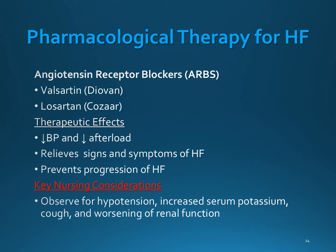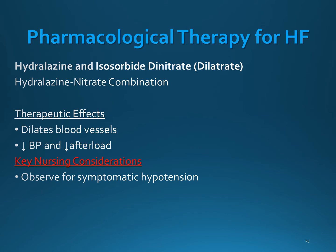Angiotensin receptor blockers, the ARBs, relieve signs and symptoms of heart failure by decreasing blood pressure and decreasing the afterload. They can also prevent the progression of heart failure. The combination of hydralazine, an arterial vasodilator that relaxes arterial blood vessels, and a nitrate, a venous dilator that relaxes veins, is used for patients who cannot take an ACE inhibitor or an angiotensin 2 receptor blocker, or for patients who need an extra medication to control symptoms of heart failure.